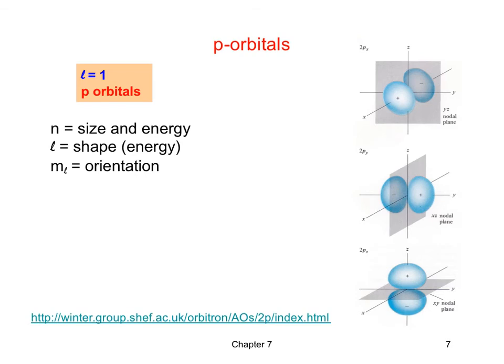When L equals 1 that's our P subshell, and M sub L can be negative 1, 0, or 1. These tell us about the different directions the orbitals lie in. There's not a one-to-one correlation between negative 1, 0, and 1 and what we call the px, py, and pz orbitals, but the three values of M sub L correspond to the three directions the P orbital can be oriented. The three orbitals in a P subshell are identical in shape and energy but pointed in different directions.